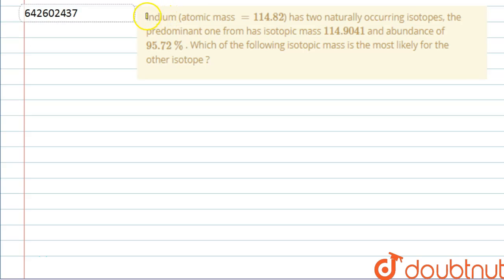The question says: Indium, atomic mass 114.82, has two naturally occurring isotopes. The predominant one has isotopic mass 114.9041 and abundance of 95.72%. Which of the following isotopic mass is the most likely for the other isotope?